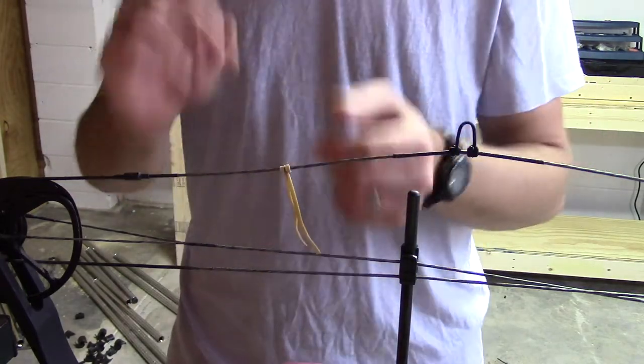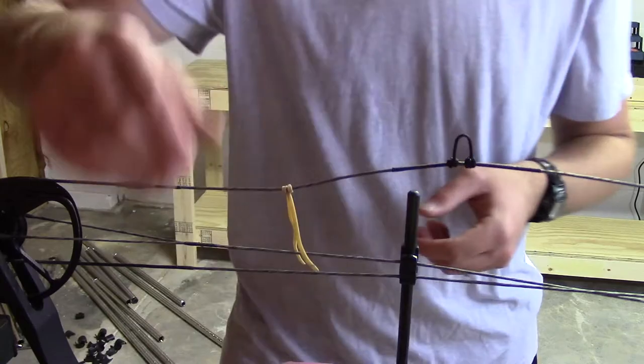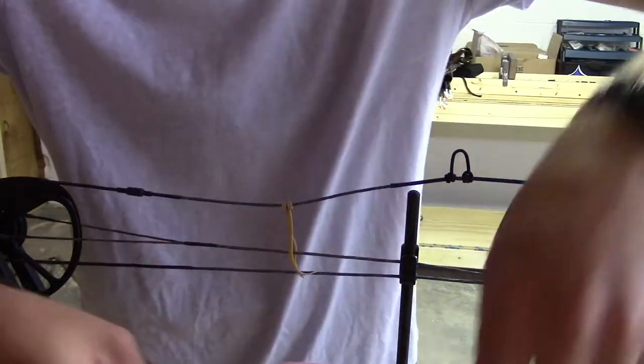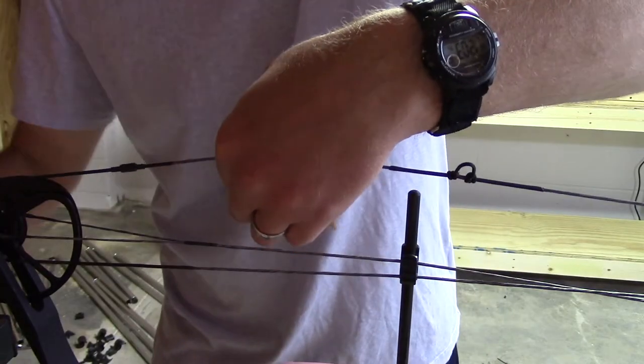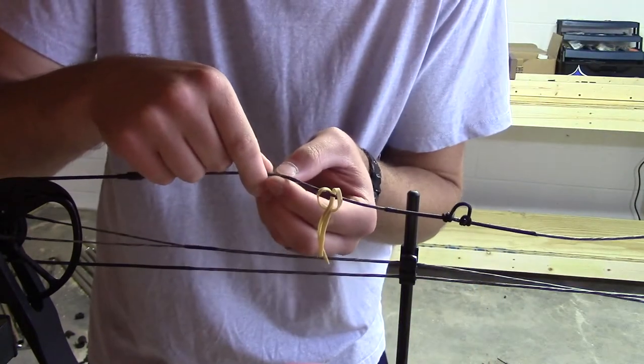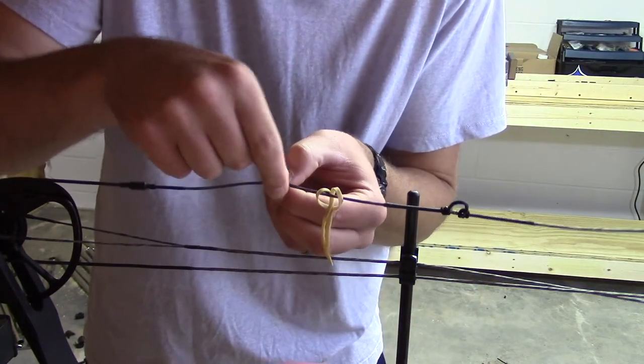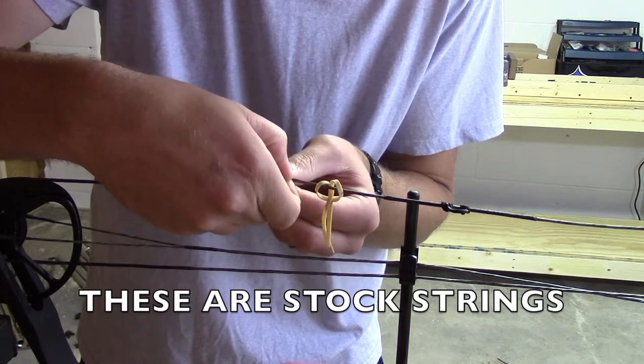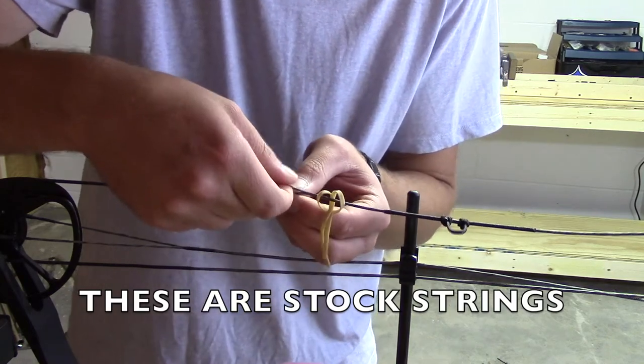So here I have my rubber band, and where my peep's going to be. You can pick any peep you like. Now this is an unfortunate thing here with this Diamond Infinite Edge, that this is not a two color string, so you kind of have to hope you find the bundles, the two bundles of 12,